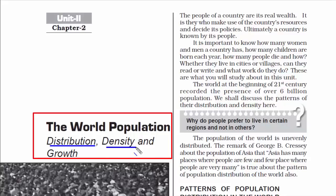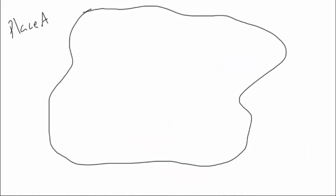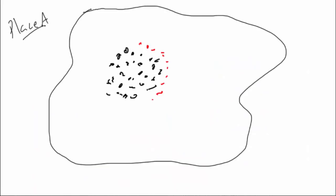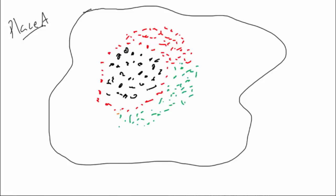Coming to the second term: density. By density we mean how many people are packed in a specific amount of space. It is important to know this because if we know how many people are squeezed in a set amount of place, we can control the population from causing environmental pollution.